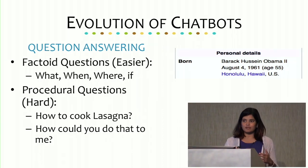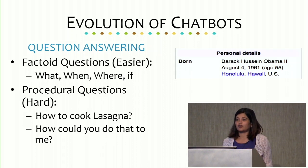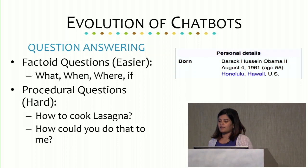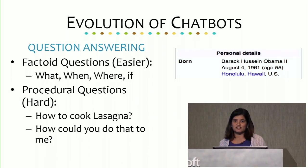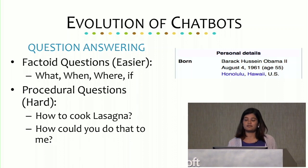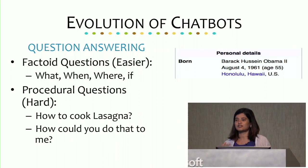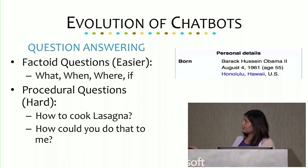Things like how to cook lasagna — this is a procedural step-by-step kind of answer. You cannot just say 'boil your pasta and you're done.' You need the entire list from start to finish and maybe pictures. Another type of hard question is something like 'How could you do that to me?' As a human being, we know the answer is 'I'm sorry,' but a computer could give a much more objective step-by-step response, which is very hard to distinguish between these two different types of questions.